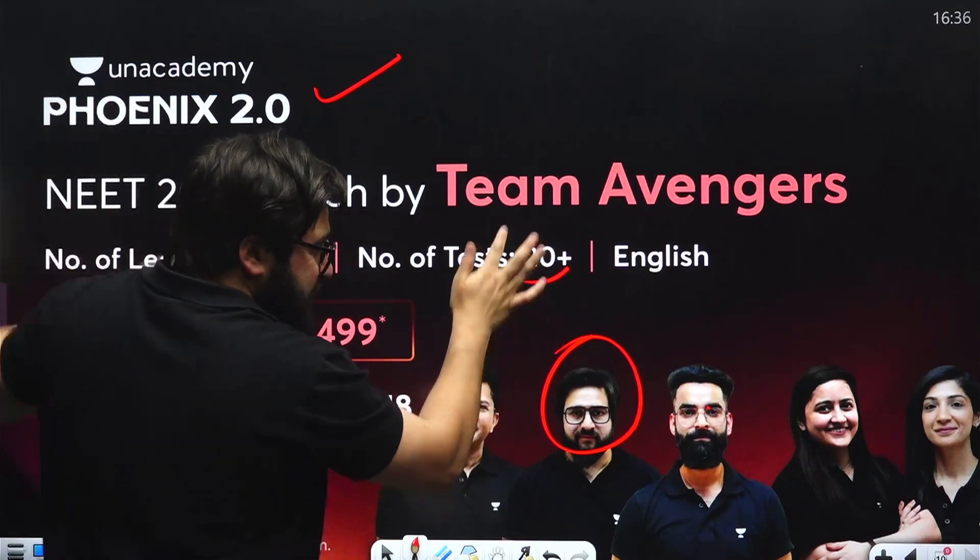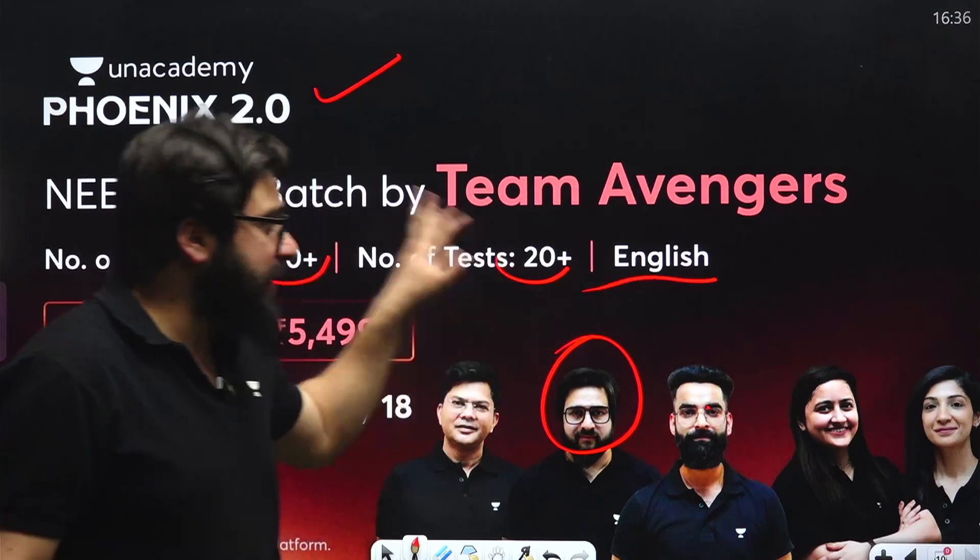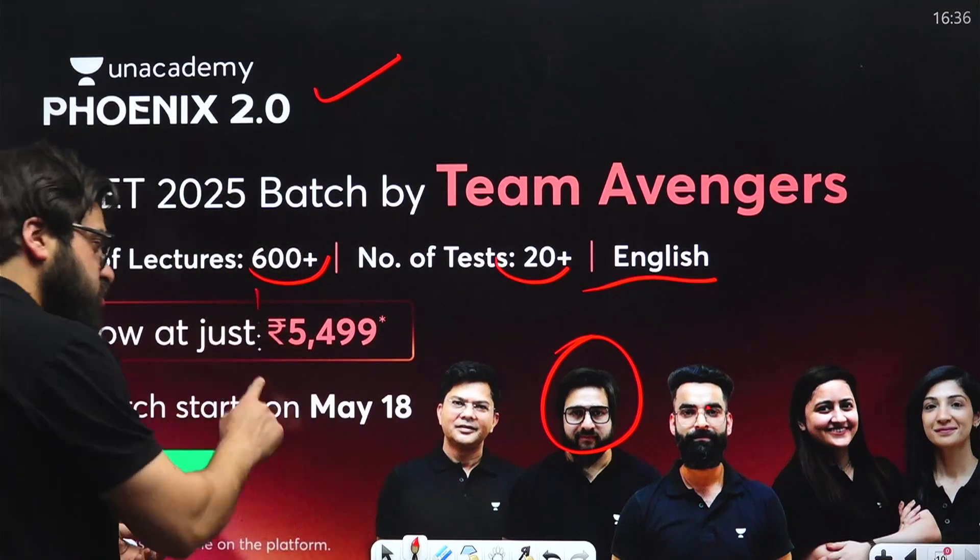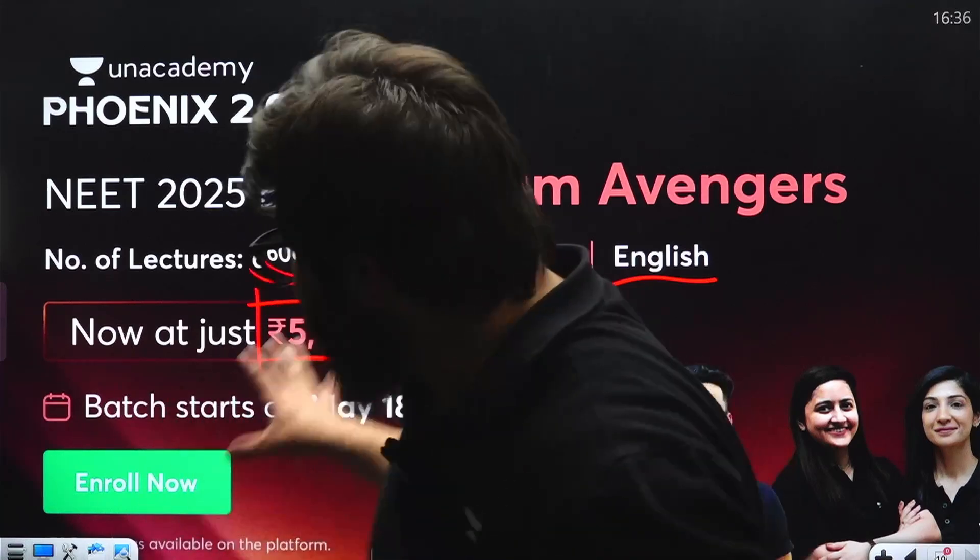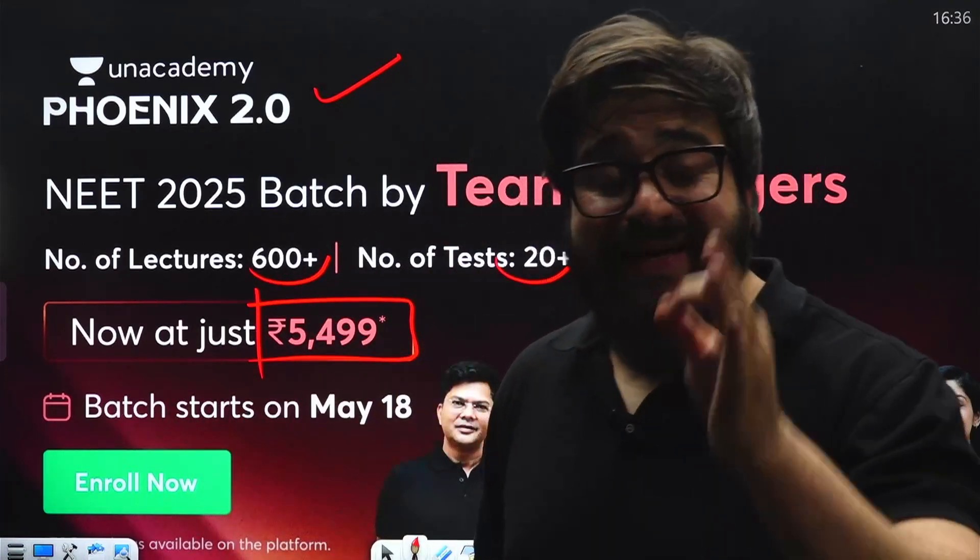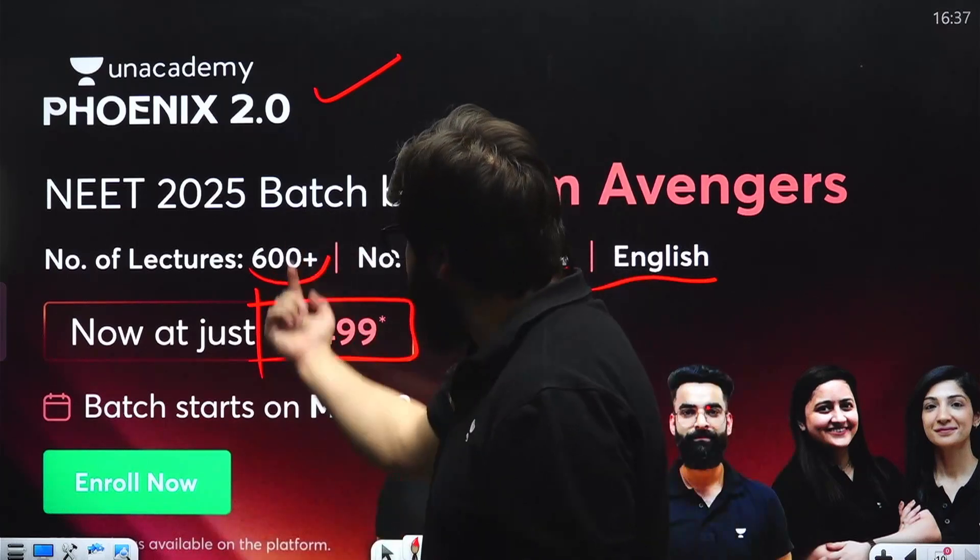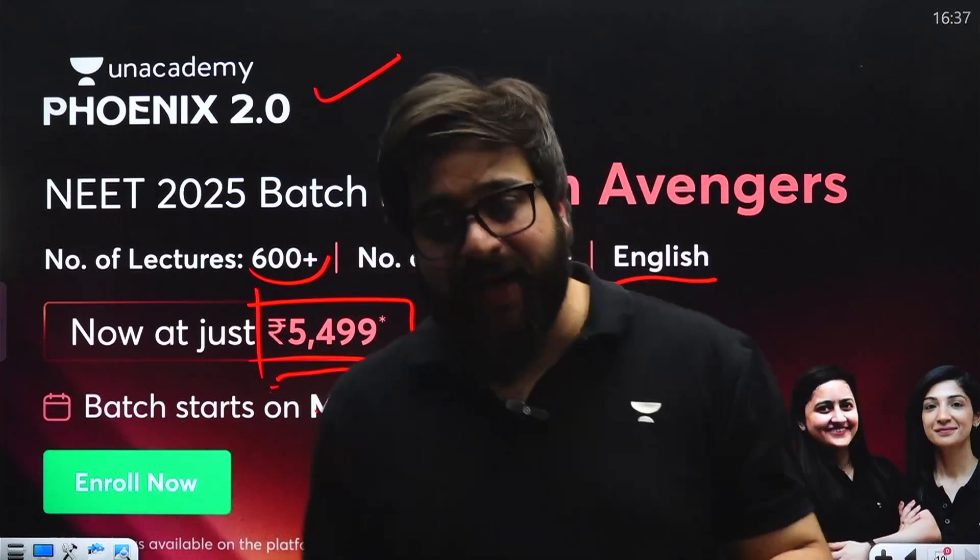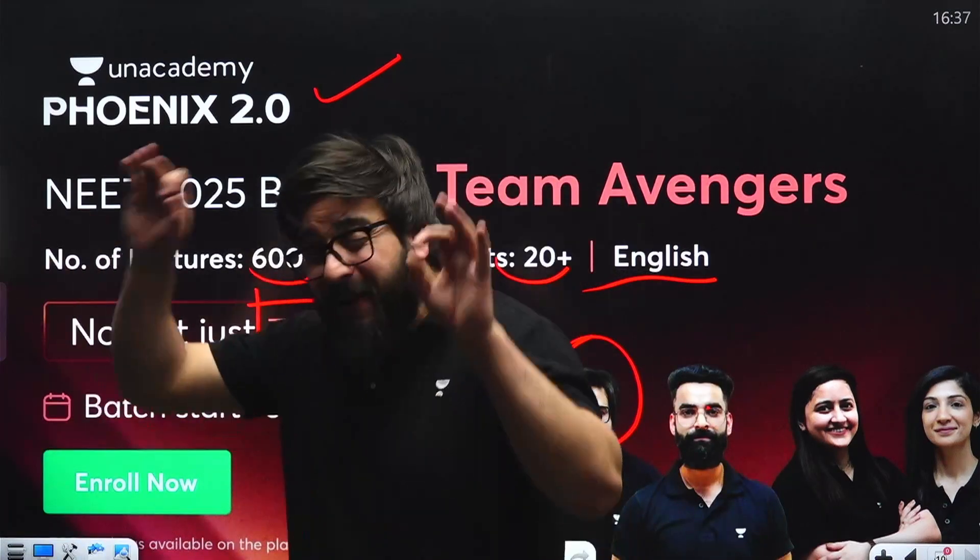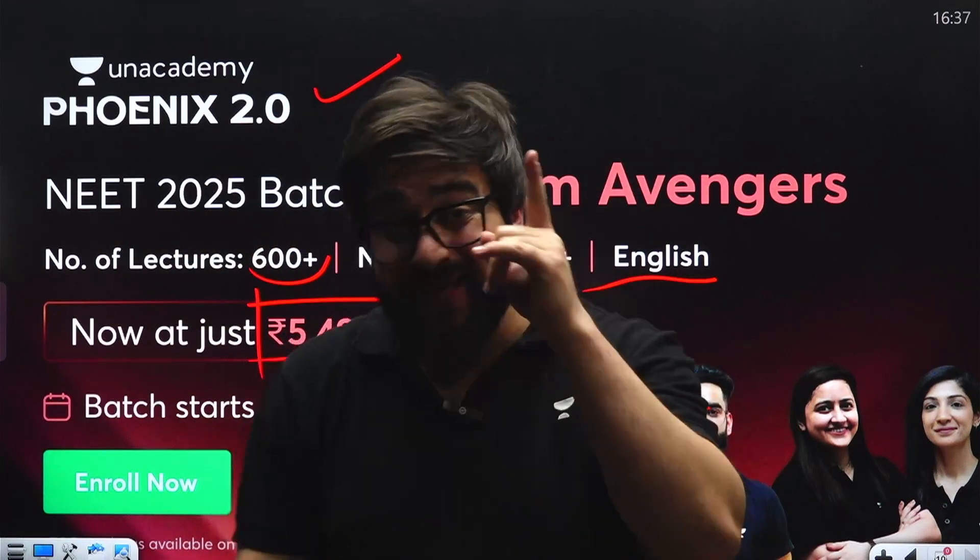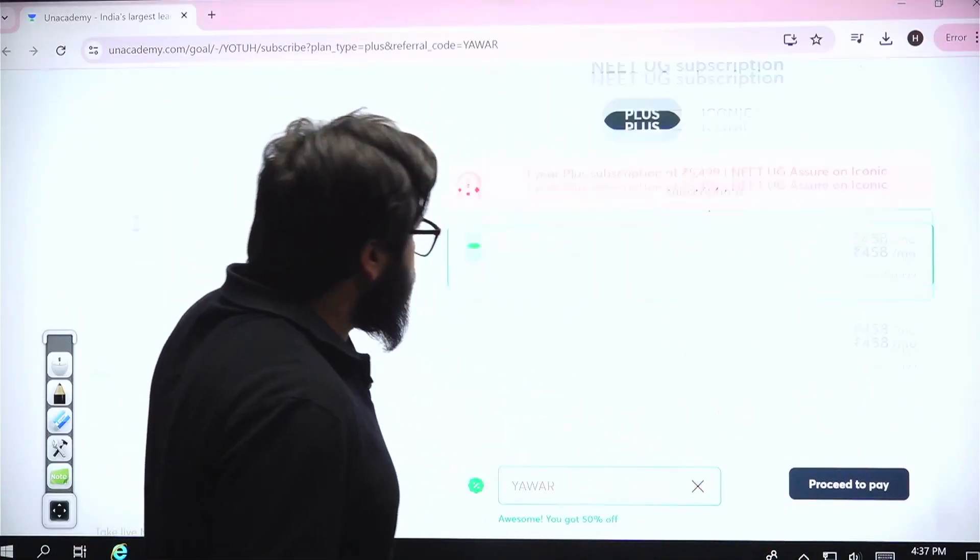Now, my dear friends, 600 plus lectures, test series you will get in the next level test series over here. Language will be completely English, and this is just for 5,499 rupees. My dear friends, not only this batch, but you will be getting the access of all the batches which are running inside Unacademy if you buy the Plus subscription right now itself. So, my dear friends, how are you going to basically buy this Plus subscription? Let me tell you.